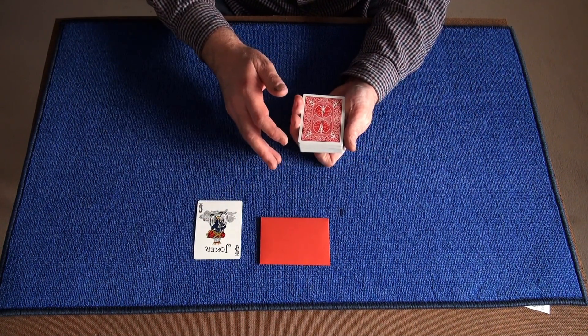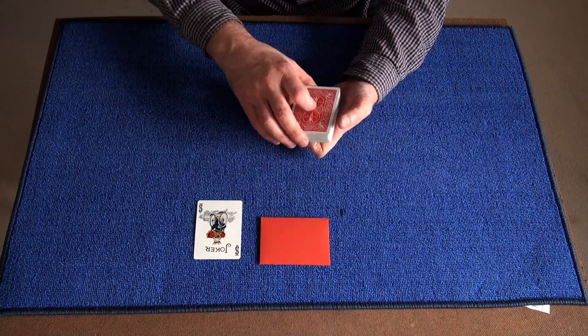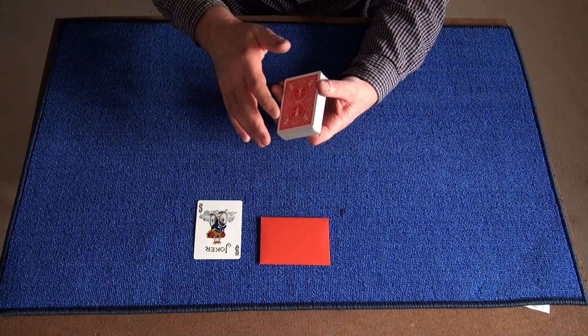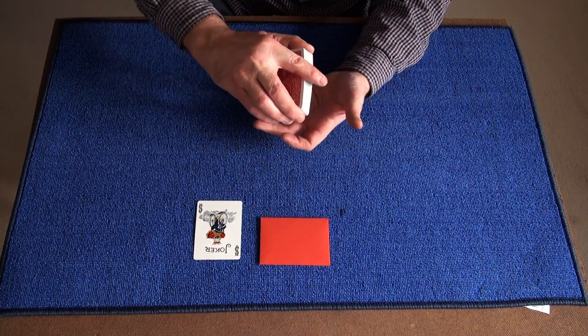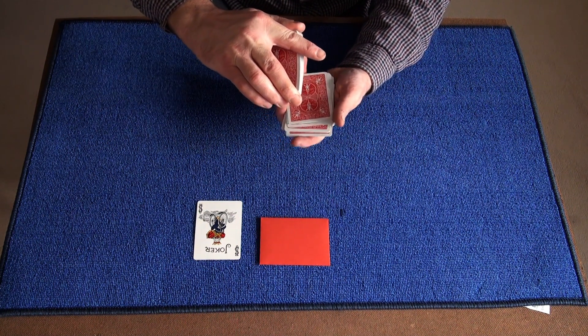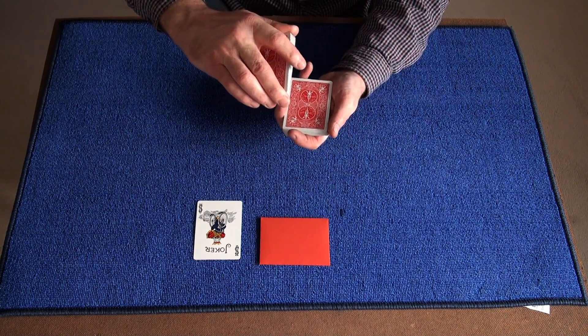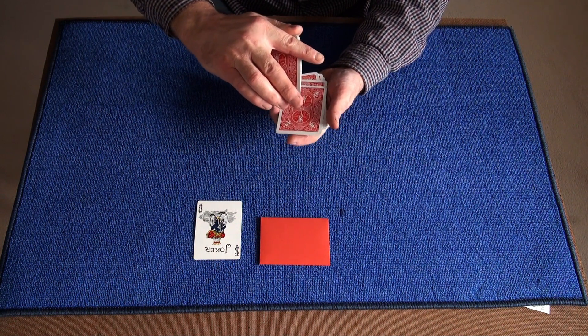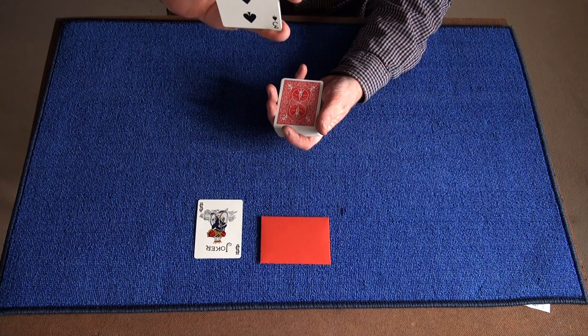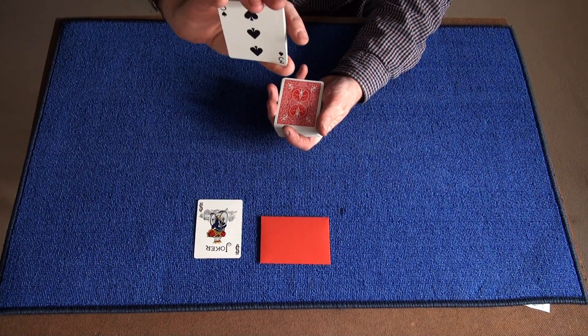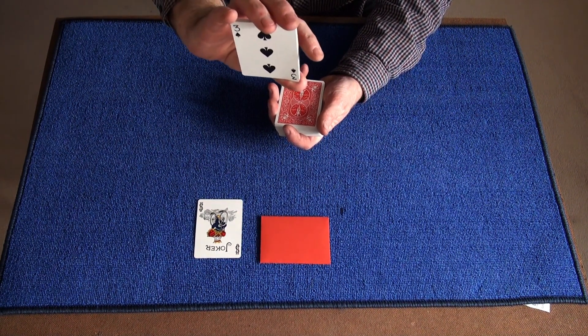Now you've dribbled down the deck. I suspect I tell you to stop, and that'll be the chosen card. Now just dribble down. Stop. Are you happy with that one, or do you want to go a bit further? Do you want to go a bit further? Stop. Okay. I'll just look over while you look at your chosen card. Remember that card. Now I'll look back.